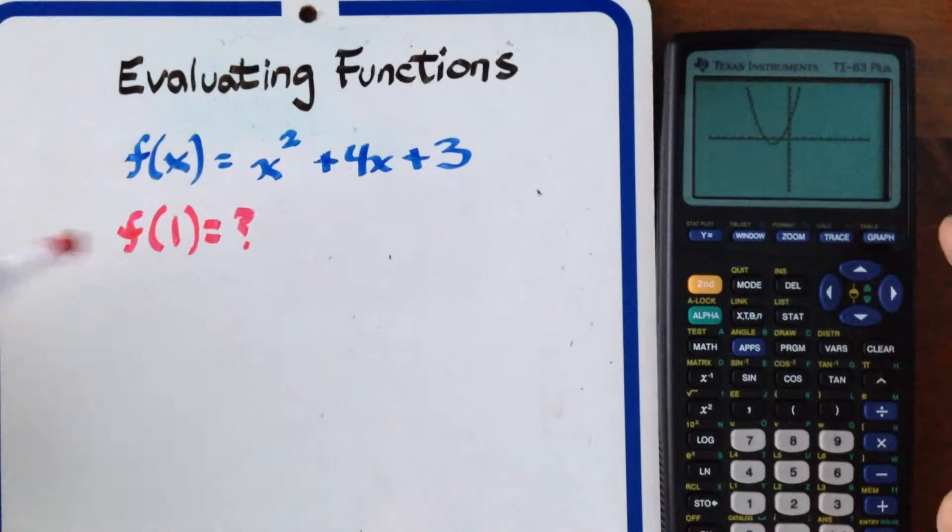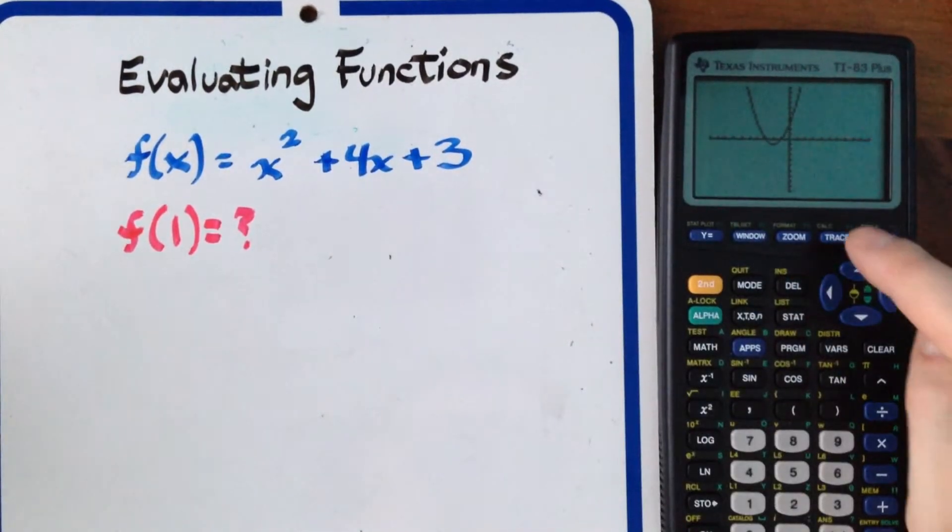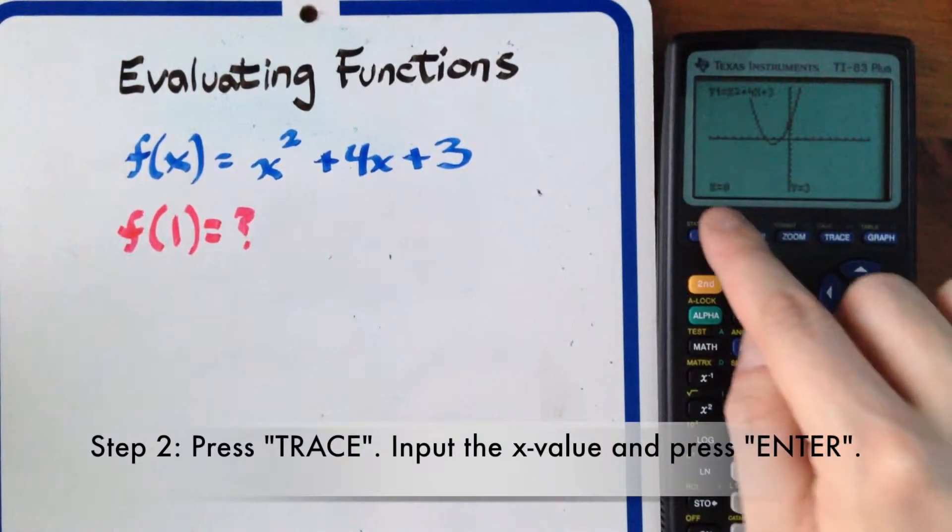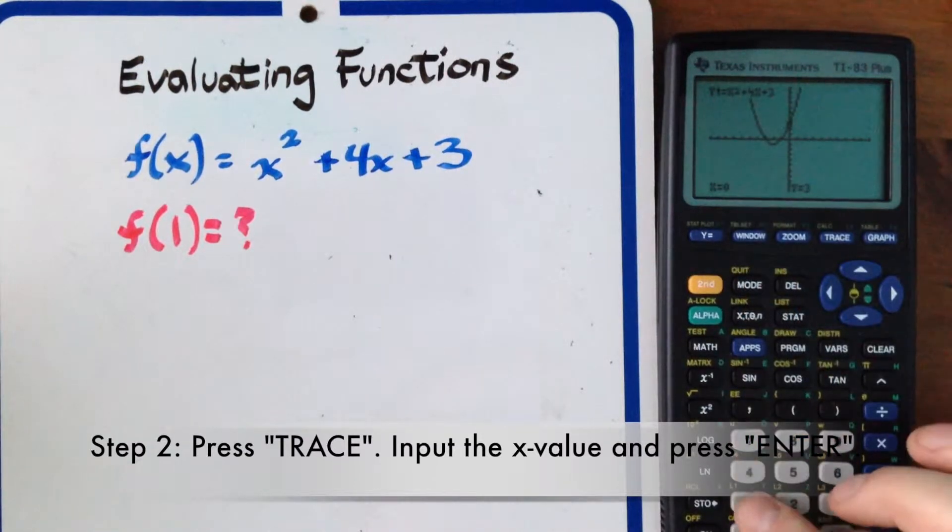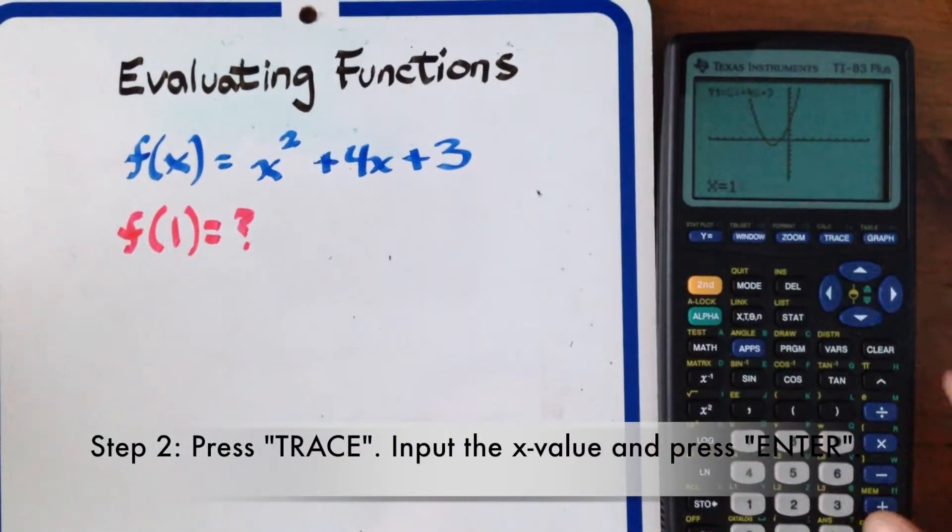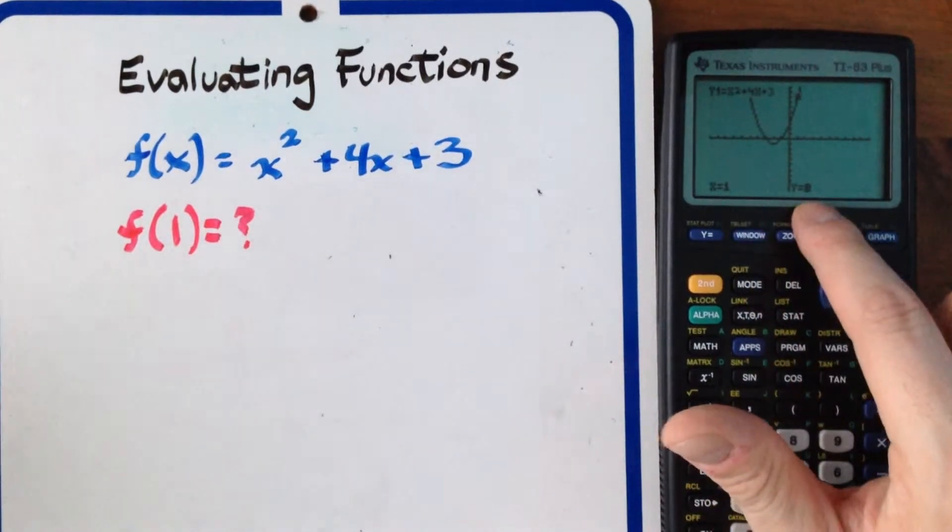And then to figure out what f(1) is we want to input 1 into this graph right here so you're going to want to hit trace and then it's going to bring up this screen right here and then you're just going to hit 1 and it says x equals 1 right here and then you just press enter and it's going to spit out what the y equals.